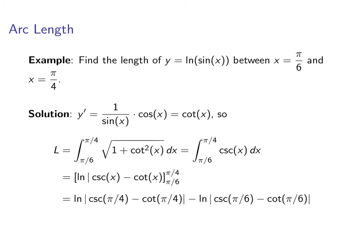Plug everything in. You get log of cosecant of pi over 4 minus cotangent of pi over 4 minus the log of cosecant of pi over 6 minus cotangent of pi over 6. And if you work everything out, you'll end up with log of root 2 minus 1 minus log of 2 minus root 3.